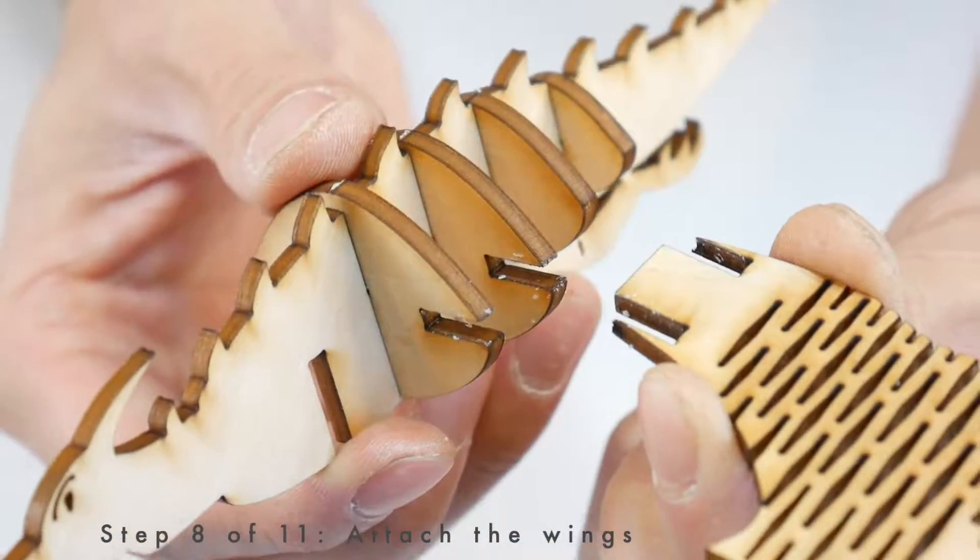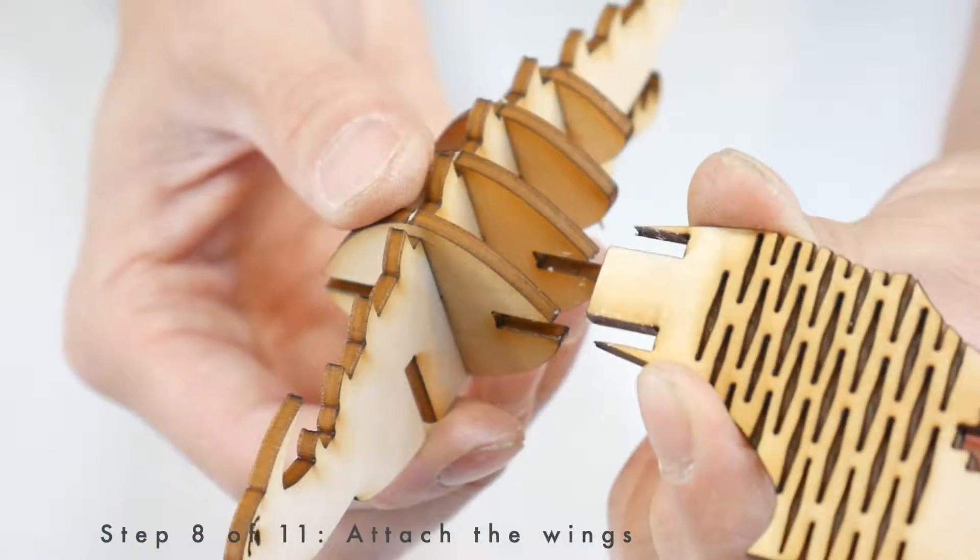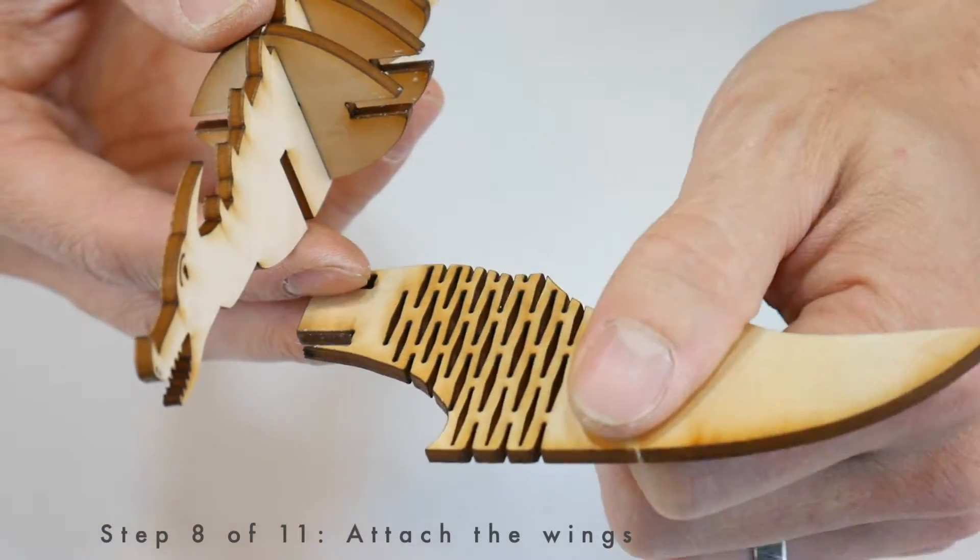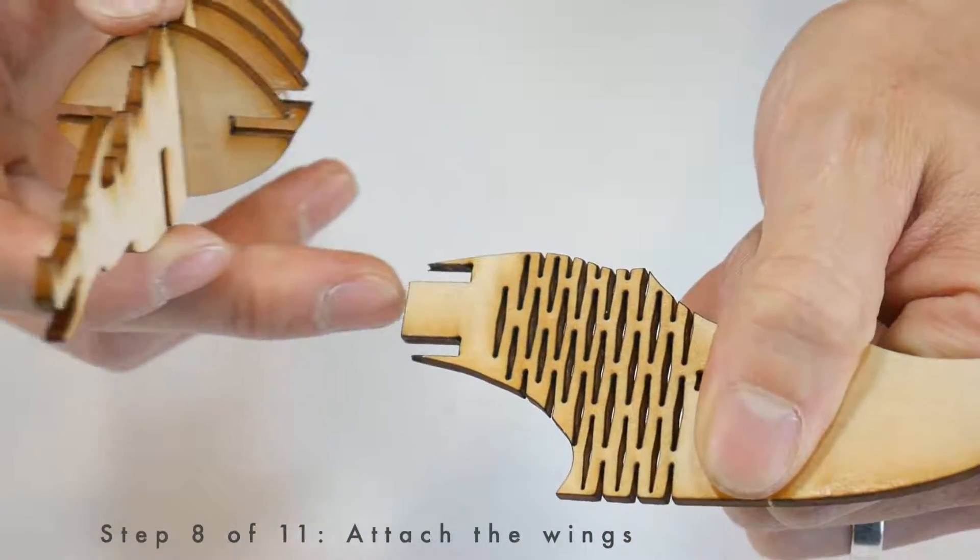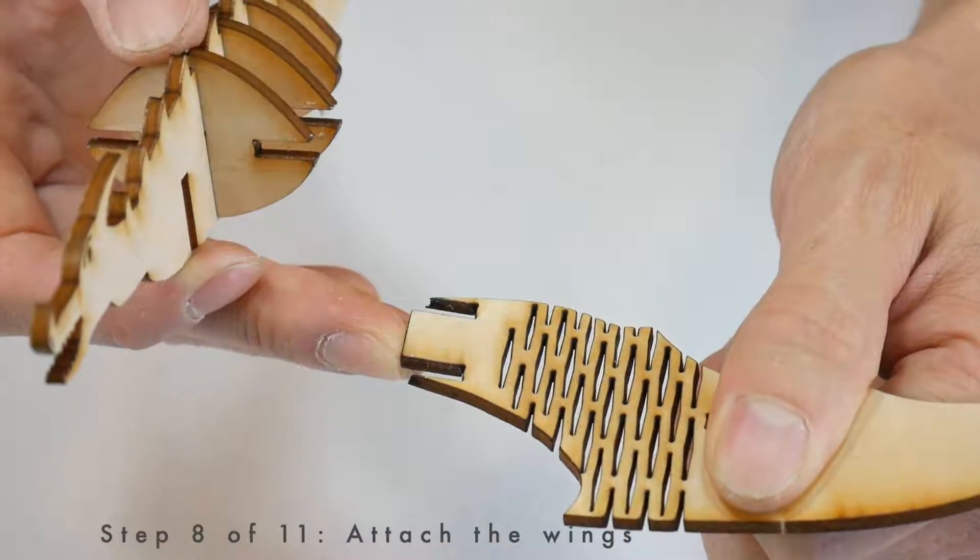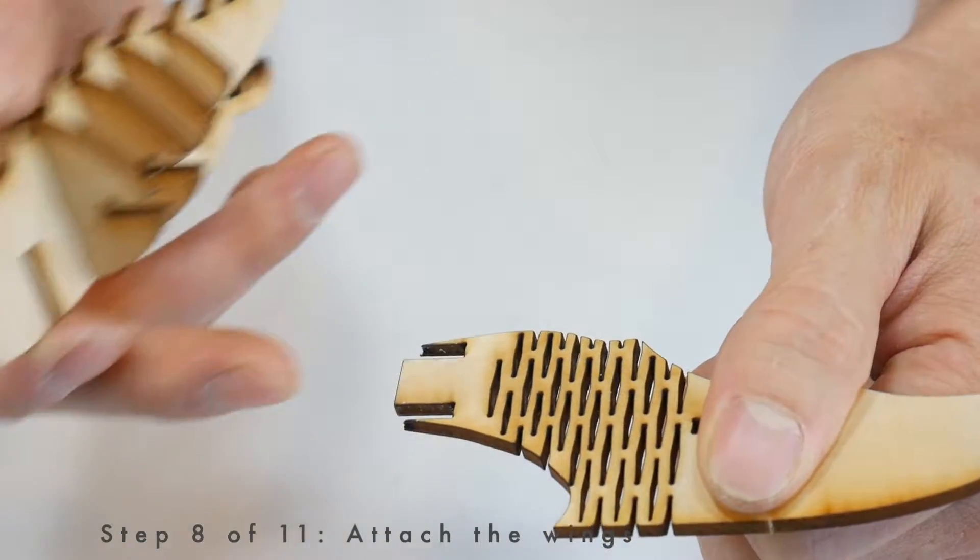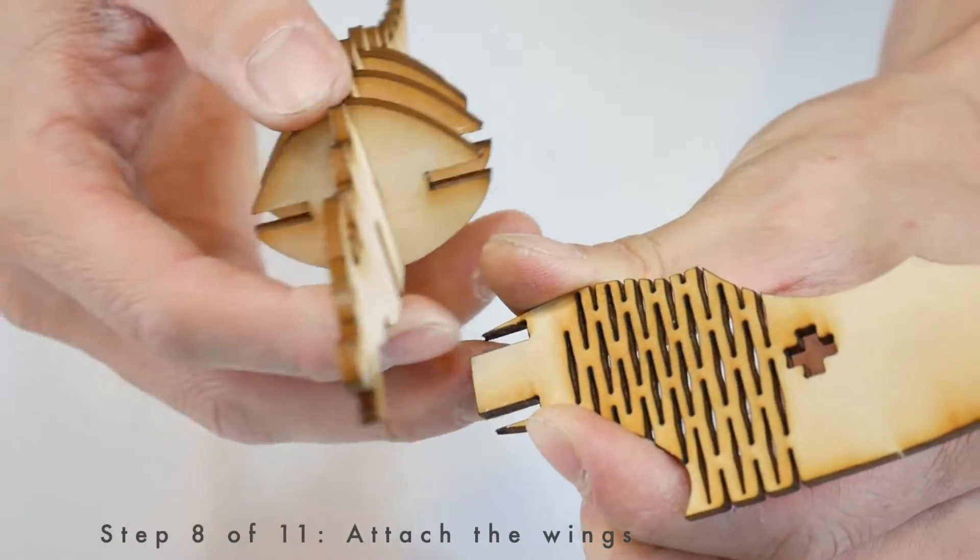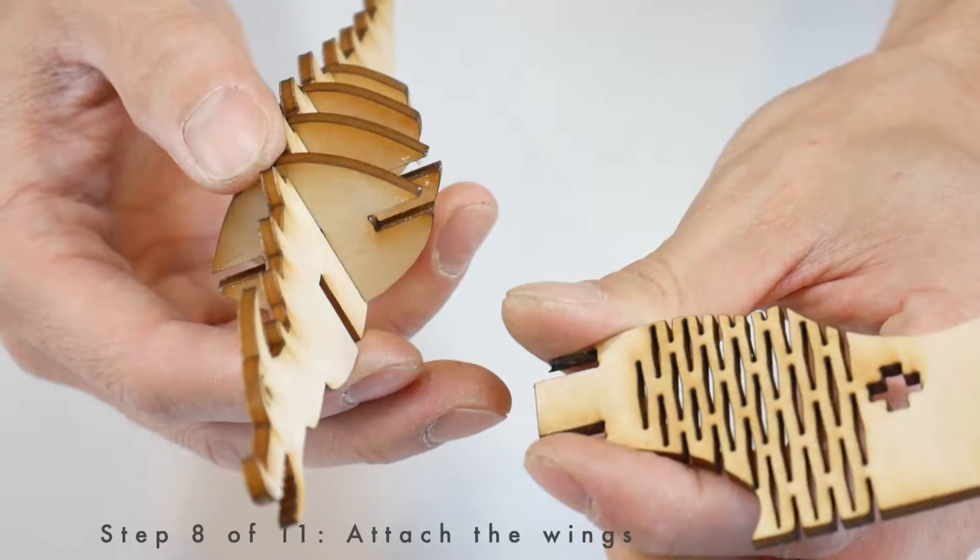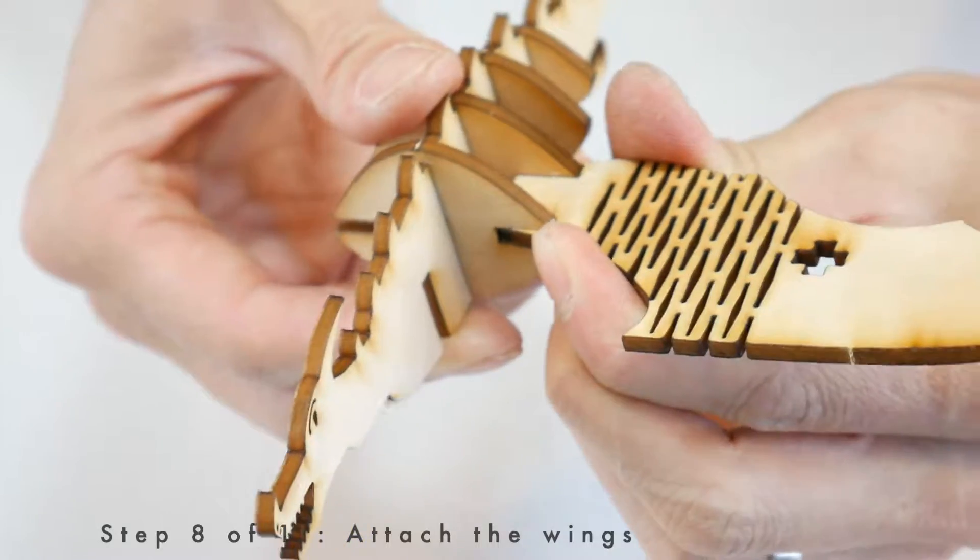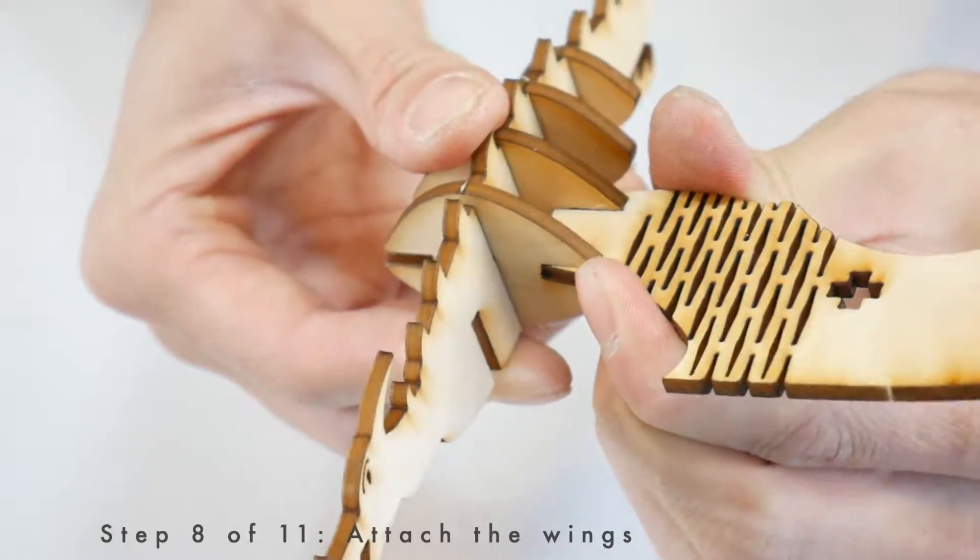We're ready to attach the wing to the dragon. First grab the wing right here. Avoid grabbing it by the living hinge and definitely do not hold it far away from these connecting slots. If you do that when you push these two pieces together this can bend and break the living hinge. So make sure to hold it firmly near these two slots but don't grab the slots themselves. Now carefully work the wing onto the body and just push and wiggle it until it gets fully inserted.